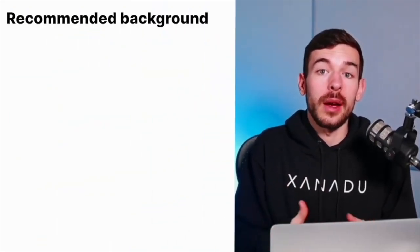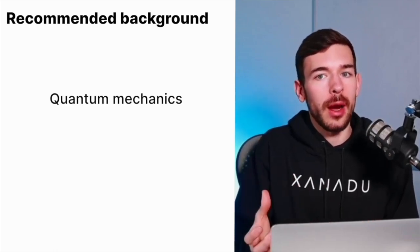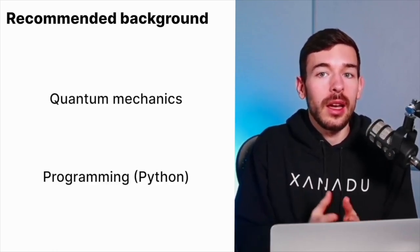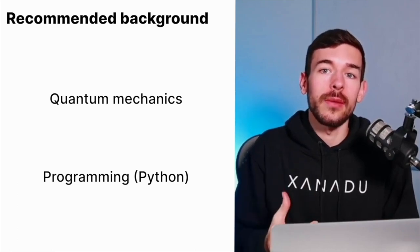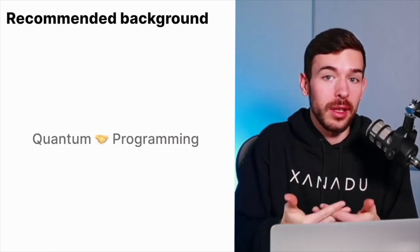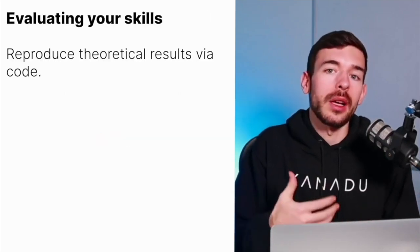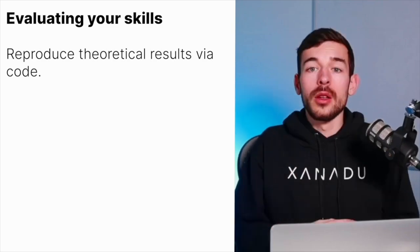Generally speaking, if you are applying to a research position, it's really important to have a strong background in quantum and of course in programming. But not only that, actually something that we are looking for is profiles that combine both skills. So the best way to check that is to ask for theoretical results via code. The purpose of this video is to see one of these technical questions and check how we can approach the solution.